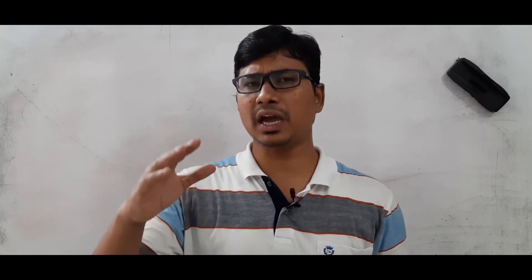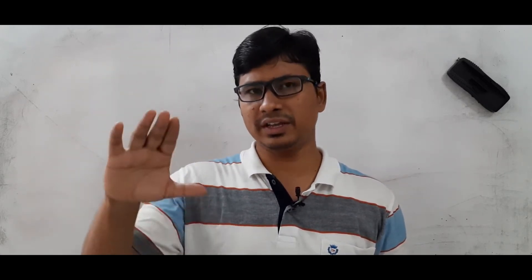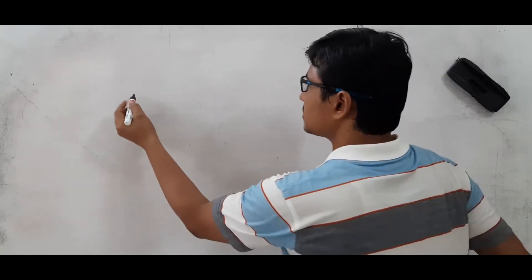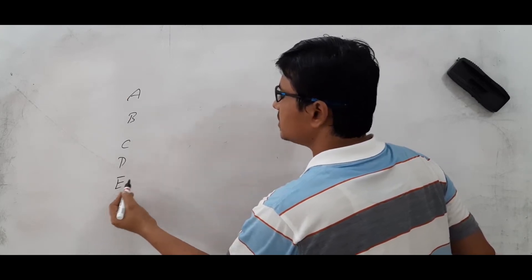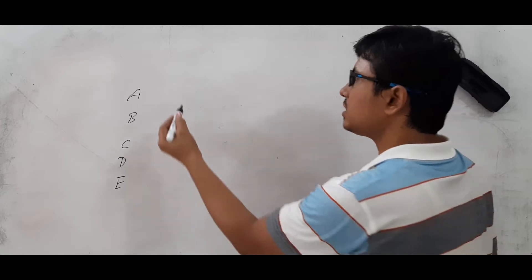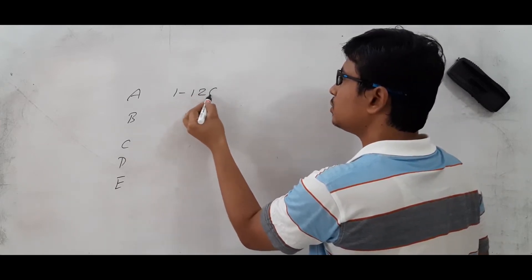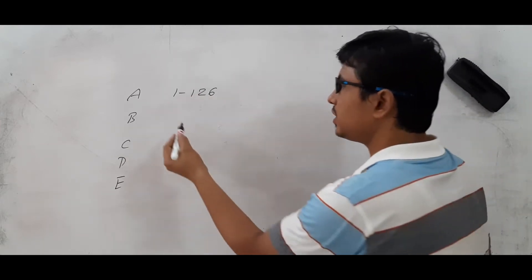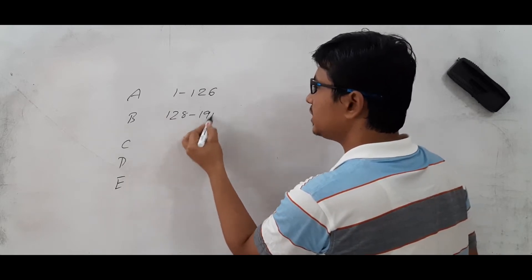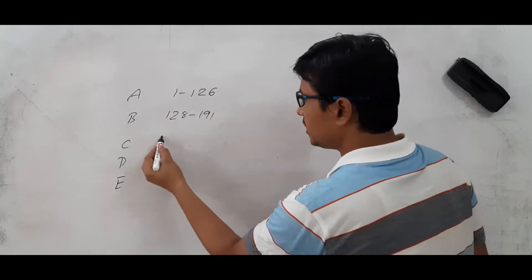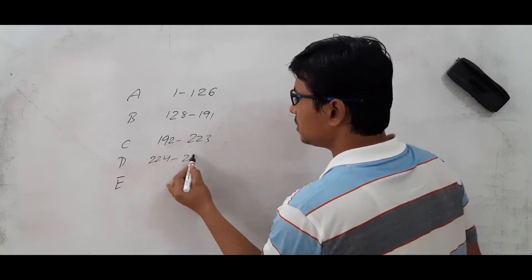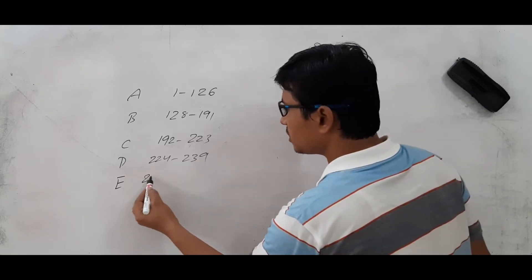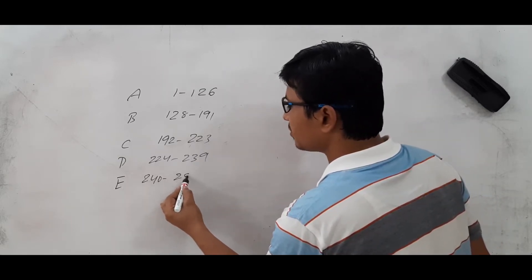In the last video, I have discussed about the ranges of various classes. In classful addressing, we have class A, class B, class C, class D, and class E. The range of class A is 1 to 126, class B is 128 to 191, class C is 192 to 223, class D is 224 to 239, and class E is 240 to 255.